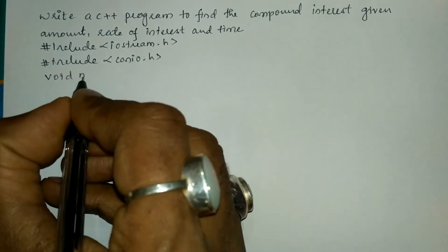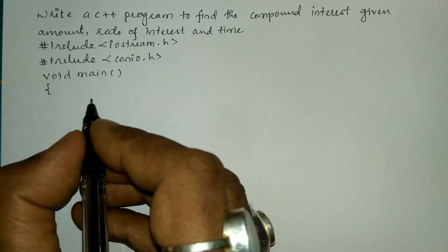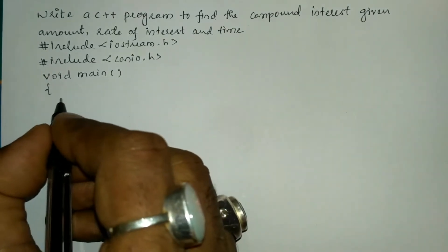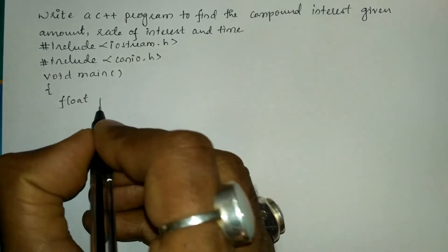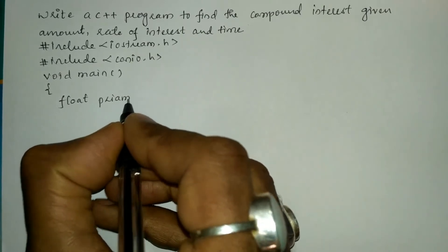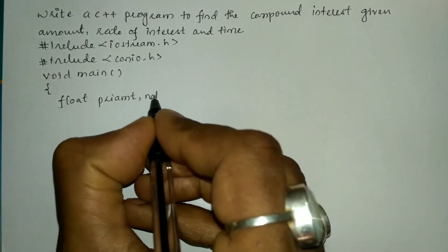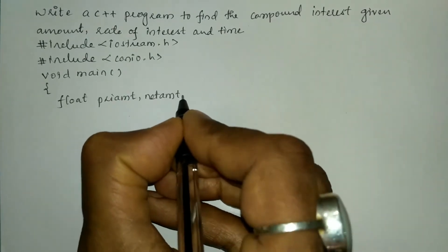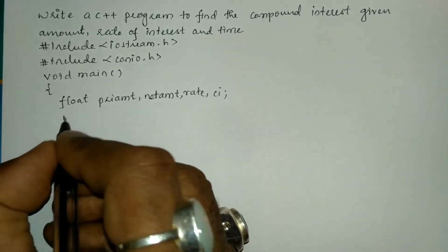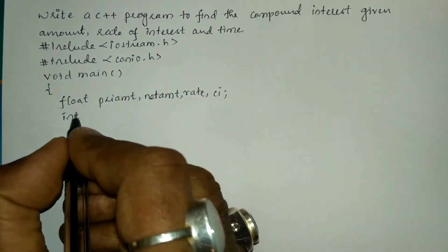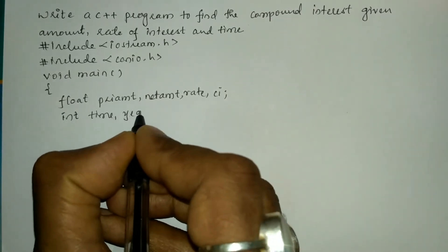Now let us write the void main function with a curly open brace. In the declaration section we are going to declare all the necessary variables with their respective data types. I am going to write the data type float, then declare: pri_amt (principal amount), net_amount, rate, and CI (compound interest). We will also declare integer variables: time and year.